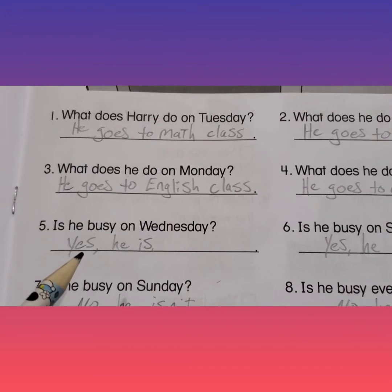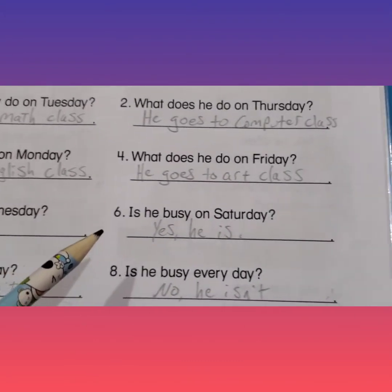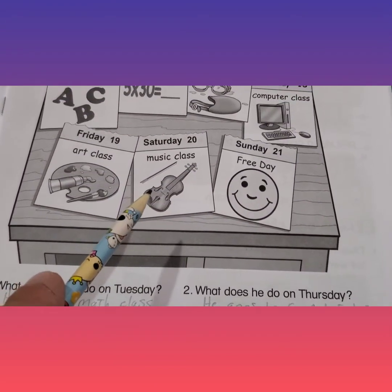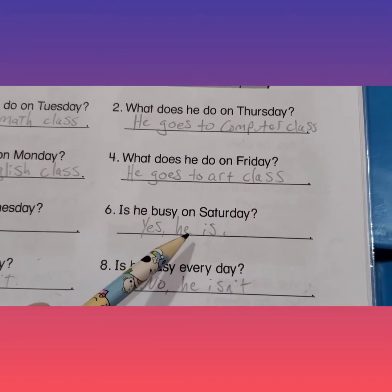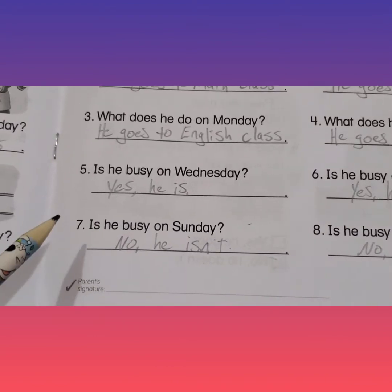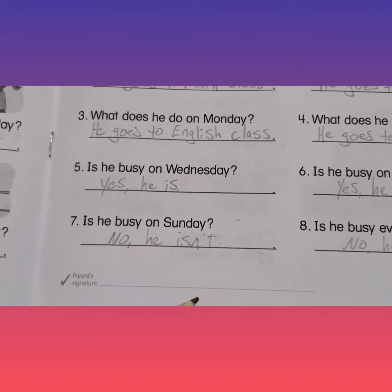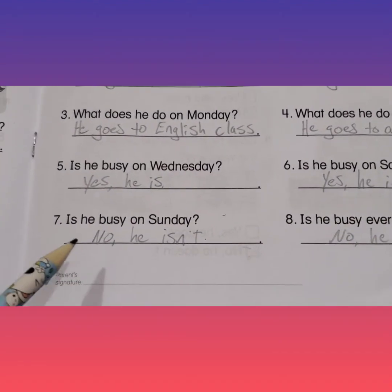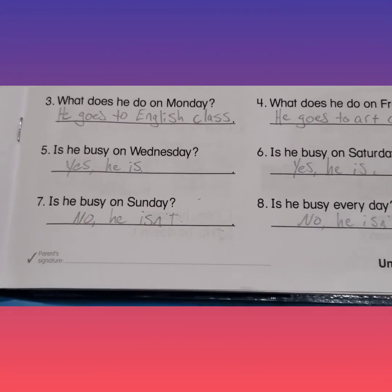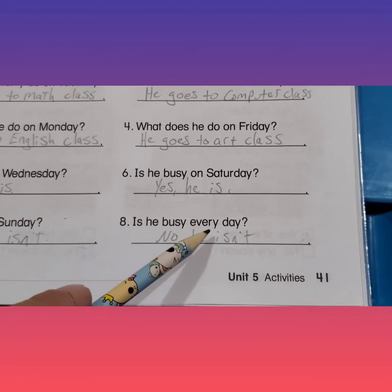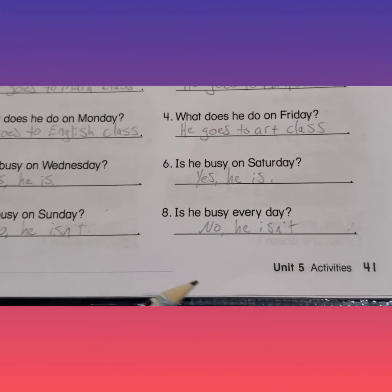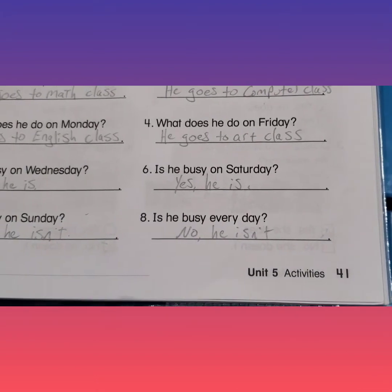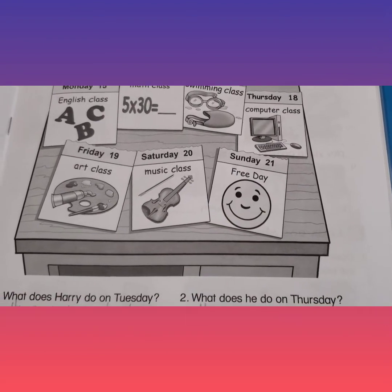Number five: is he busy on Wednesday? Wednesday — yes, he is. Is he busy on Saturday? Is he busy on Sunday? Do you remember what Sunday was? It's a smiley face, it's his free day — no, he isn't. He isn't busy on Sunday. Is he busy every day? Well, we know he wasn't busy on Sunday, so no, he isn't — he isn't busy every day because he has Sunday off.